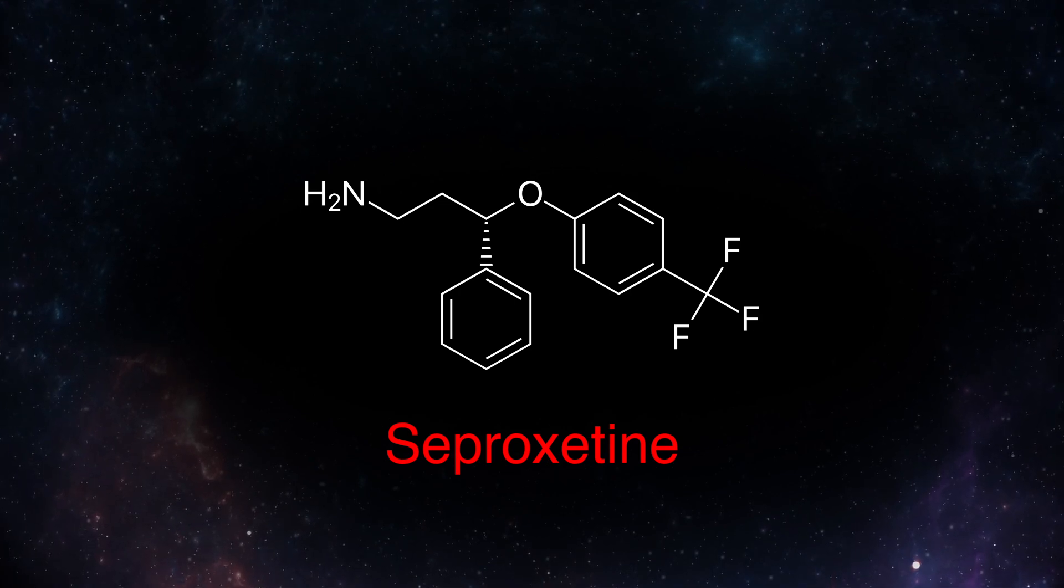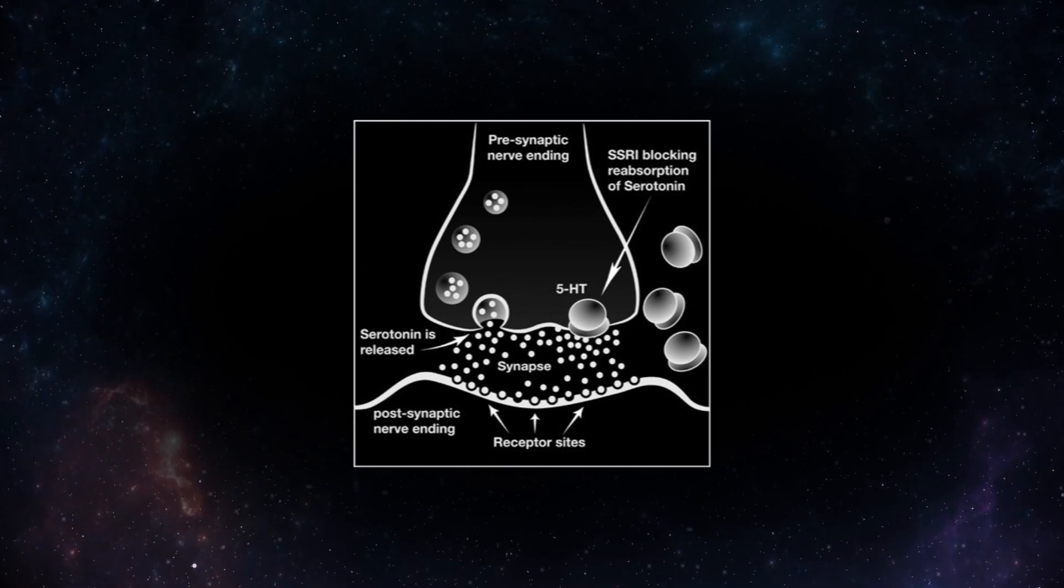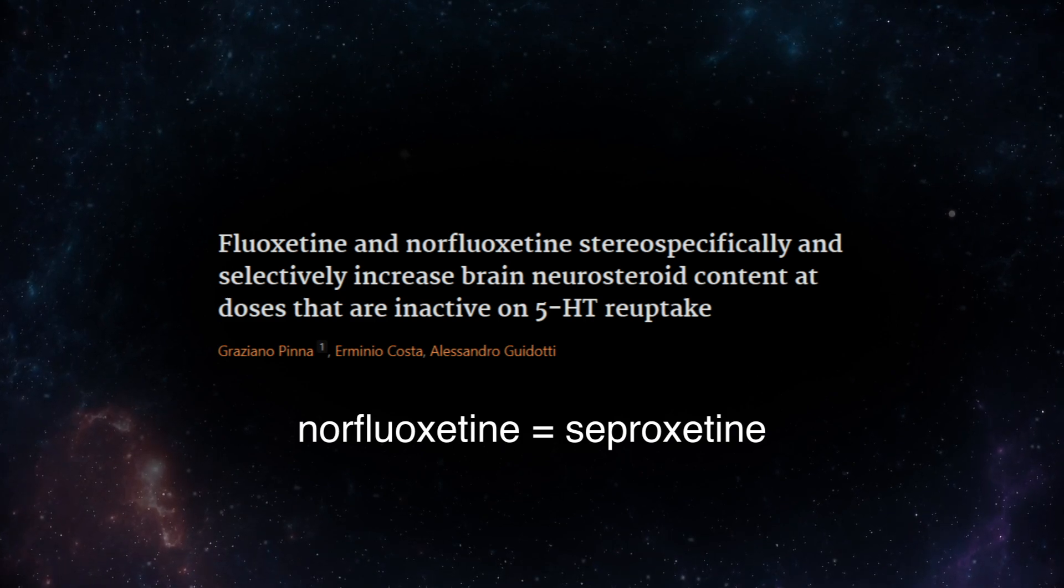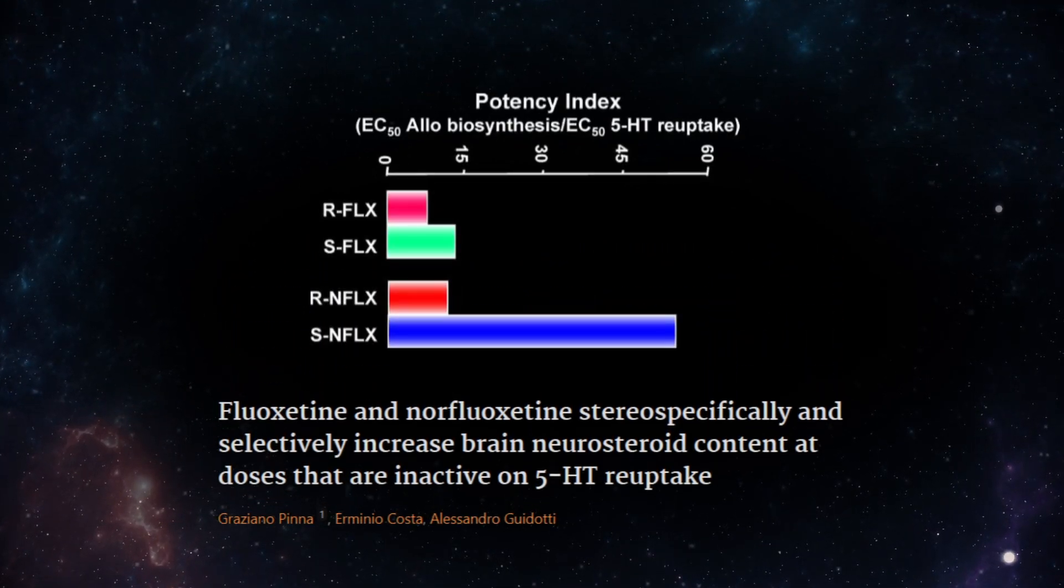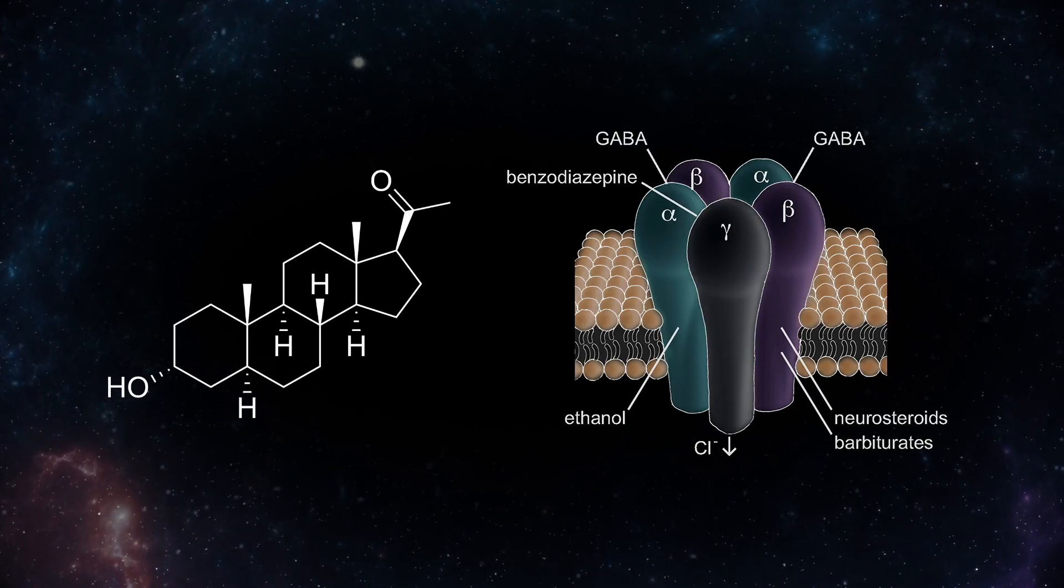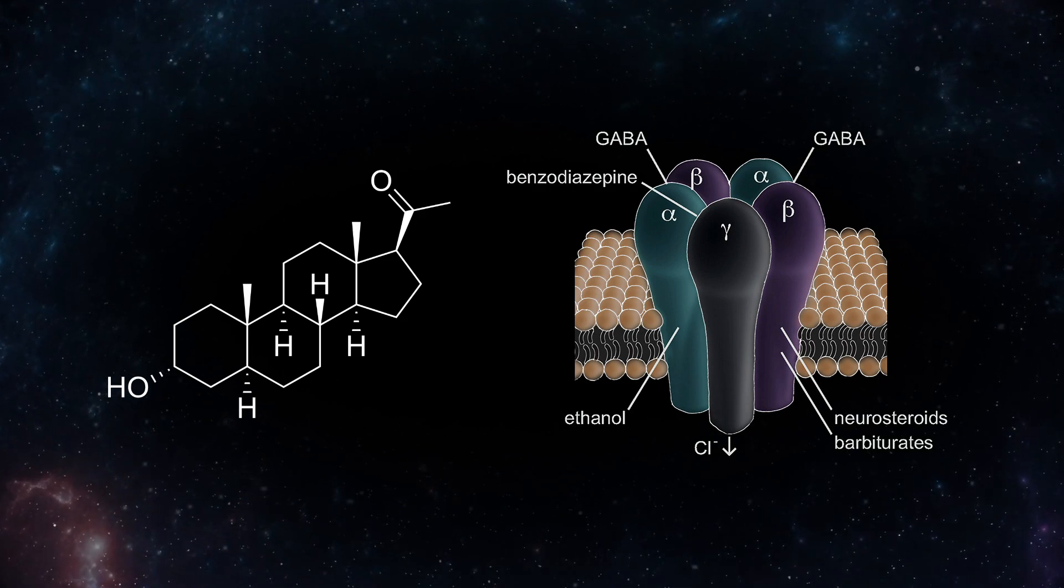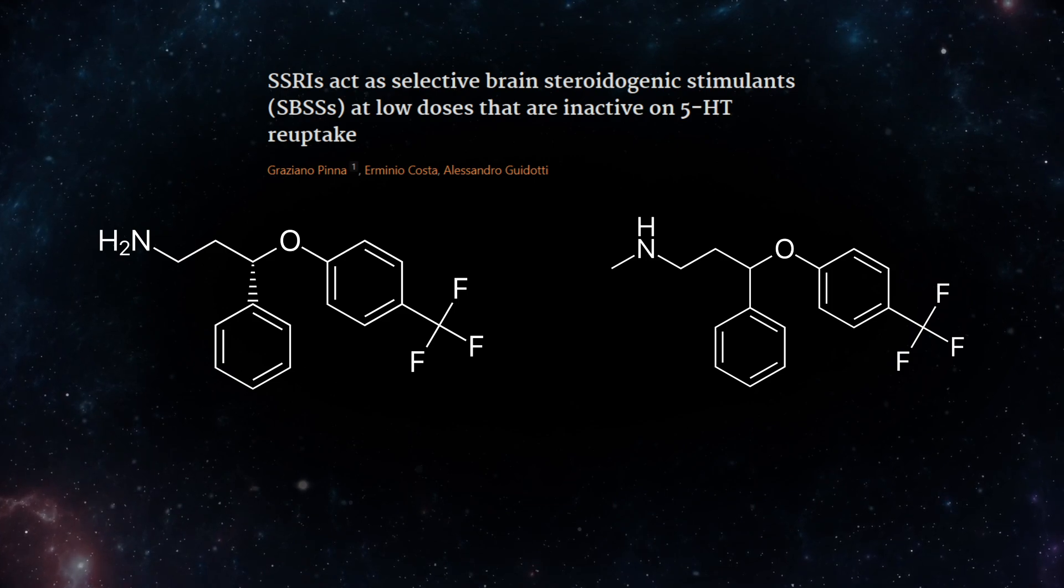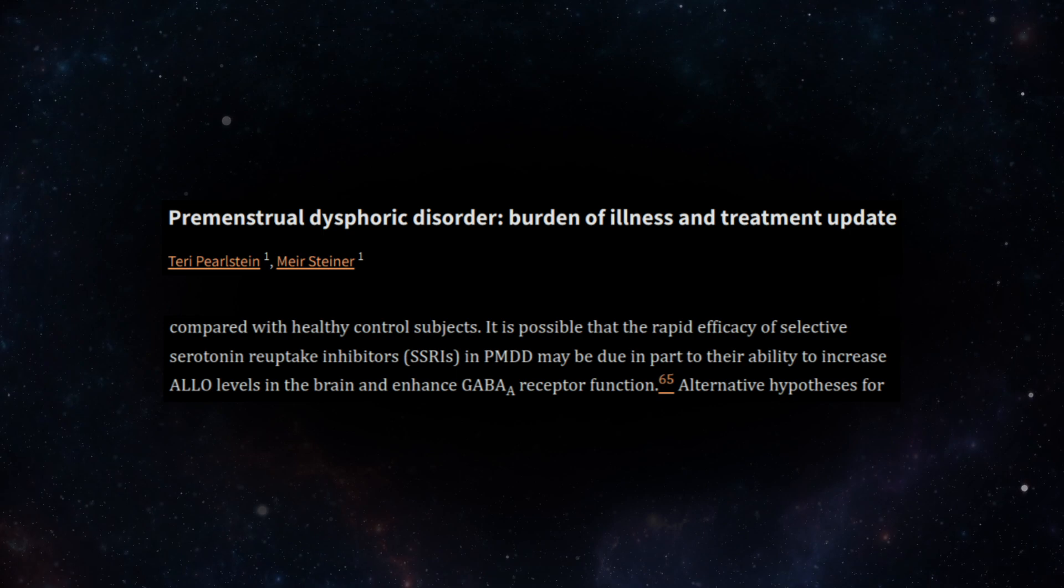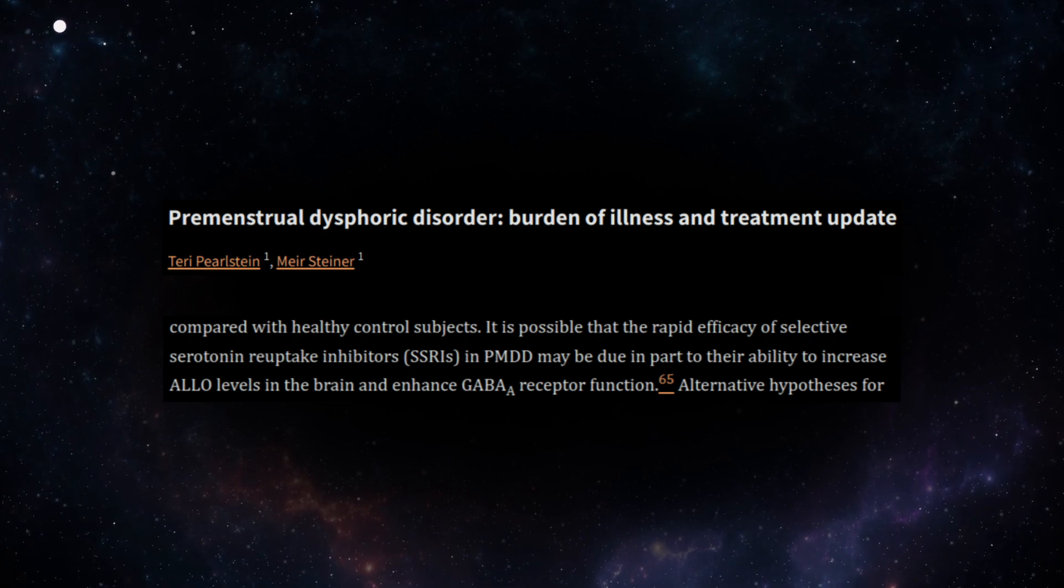Serproxetine is a major metabolite of the antidepressant fluoxetine, also known as Prozac. Like its parent compound, at higher doses it inhibits the reuptake of serotonin, but at doses that do not have appreciable effects on serotonin reuptake, it is four times more selective at stimulating the synthesis of the neurosteroid allopregnanolone, a neurosteroid known to have positive allosteric modulatory effects on the GABA-A receptor, as well as sedative and anxiolytic effects. Both fluoxetine and serproxetine have been described as selective brain steroid stimulants, an action that is thought to be highly relevant to their paradoxically quick efficacy in the treatment of premenstrual dysphoric disorder.